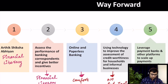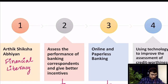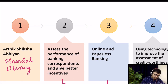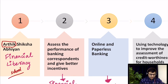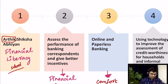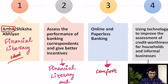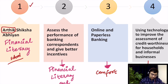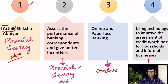What is the way forward to improve financial inclusion? First is Arthik Shiksha Abhiyan, which is related with financial literacy. Arthik means related with finance and Shiksha means literacy in school. The purpose is to make financial literacy a part of the school curriculum so that students understand how financial markets work. Second is to assess the performance of banking correspondents and give better incentives — the purpose is twofold: financial literacy, and increased access, because even now a lot of rural areas do not have access to banking services, and banking correspondents are the nearest point of connection between people and the bank.